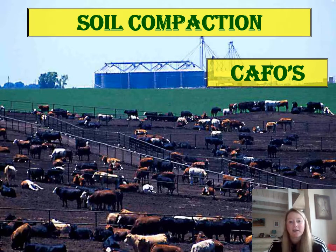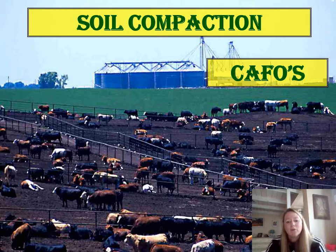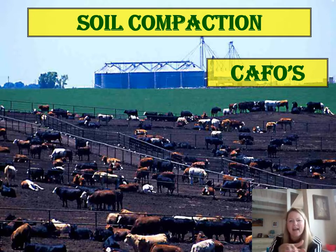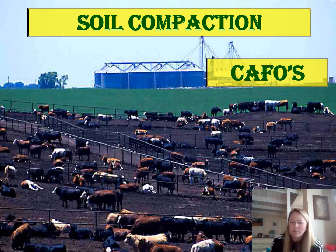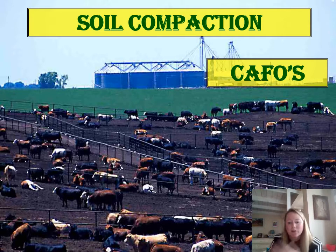A CAFO — concentrated animal feeding operation — is commonly found in grassland biomes. When you have a lot of grazers in a small area, their hooves compact the soil, making it almost cement-like. When it rains, water and nutrients run right off into the nearest waterway. This leads to desert-like soil conditions — desertification — because the soil is depleted of oxygen, water, and nutrients and is pretty much dead.